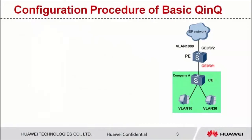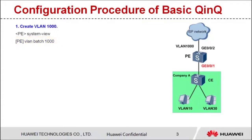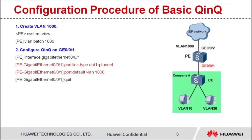Let's see the configuration procedure. Step 1: create VLAN 1000 on the PE. You can run the VLAN batch command to create one or more VLANs. Step 2: configure basic QNQ on GE0/0/1. Set the link type of the interface to QNQ. Run the port default VLAN 1000 command to set the VLAN ID to VLAN 1000 and add the interface to VLAN 1000.